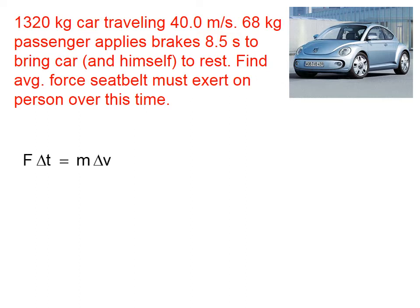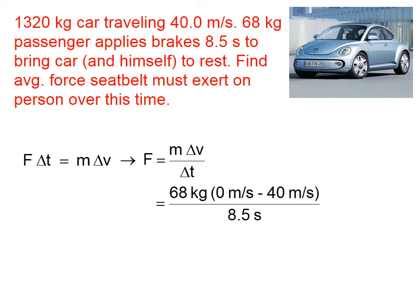Let's start with the Impulse Momentum Theorem. We want to find the force exerted on the passenger, so let's divide both sides of the equation by delta T to get F by itself. If we're talking about the force exerted on the passenger, the mass of the car is irrelevant. So the mass M here is simply that of the passenger — 68 kilograms. Delta V is the change in velocity.